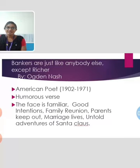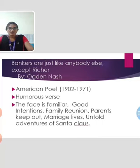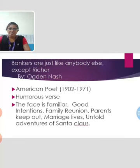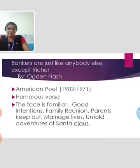The next poem is Bankers Are Just Like Anybody Else Except Richer. It was written by Ogden Nash. Ogden Nash was an American poet. In 1931, he published two volumes of verses, Hard Lines and Freewheeling, and soon became a popular writer of humorous verse. His best known collections are The Face Is Familiar, Good Intentions, Family Reunion, Parents Keep Out, Marriage Lines, and Untold Adventures of Santa Claus. This poem is written in the usual Ogden Nash style, combining fun and philosophy.